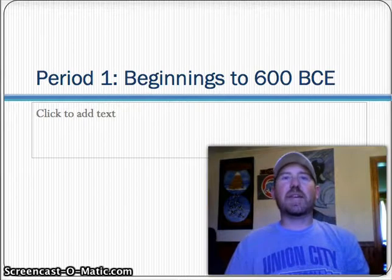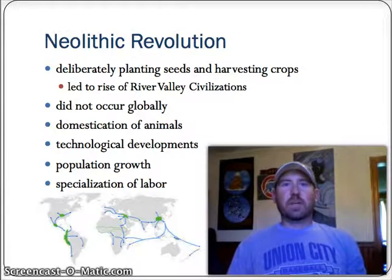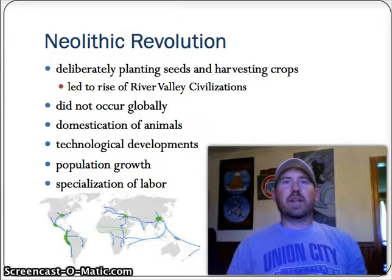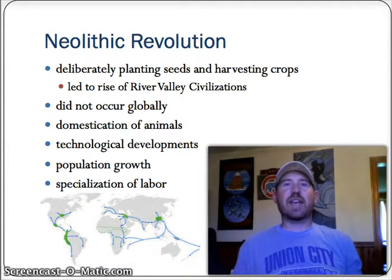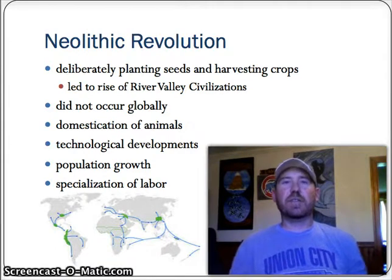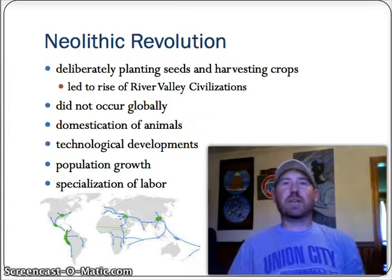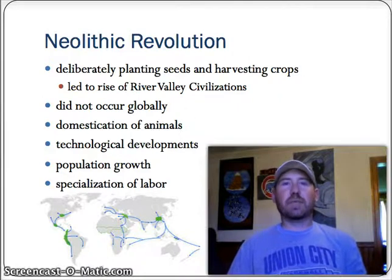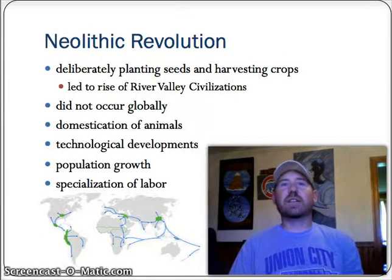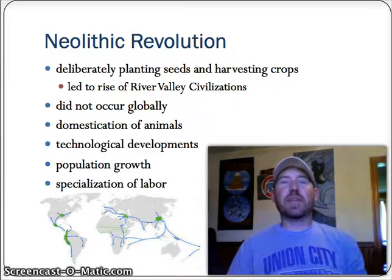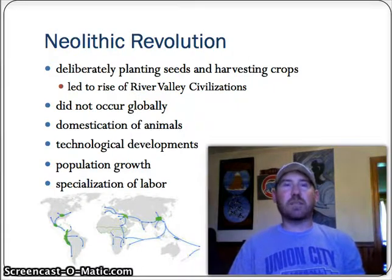We're going to begin with the period beginnings to 600 BCE. The first thing we're going to deal with is the Neolithic Revolution. It's a watershed moment — something that completely changes the course of human history. For the first time, people didn't have to go chasing their food. Their lives weren't determined by the migrations of animals. For the first time, you could stay in one place, grow crops, and deliberately plant seeds and harvest crops. It happens in several places across the world during this time period.